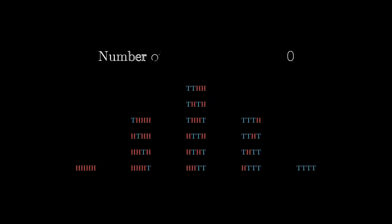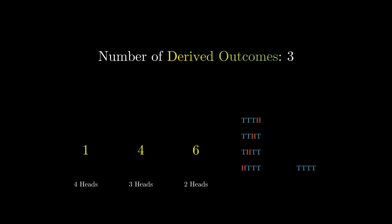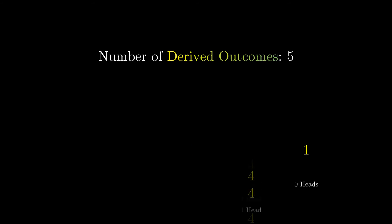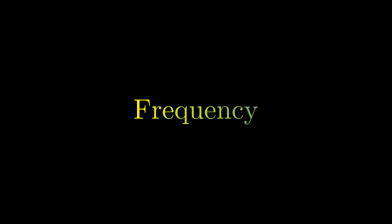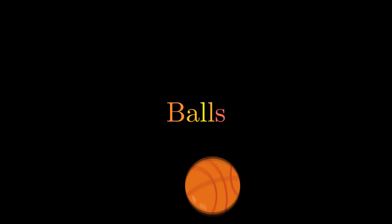Out of curiosity, we're going to rearrange these possible outcomes into groups, where each group represents the number of heads contained in each outcome. Therefore there is only one outcome containing four heads, four outcomes containing three heads, six containing two heads, and so on. This will be useful in our upcoming discussions.